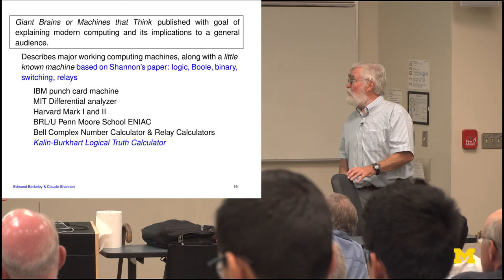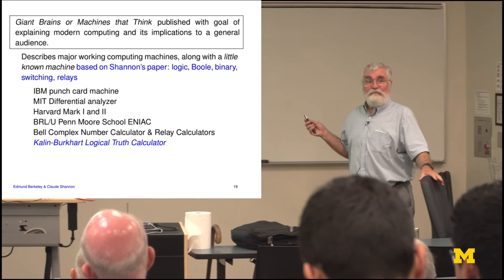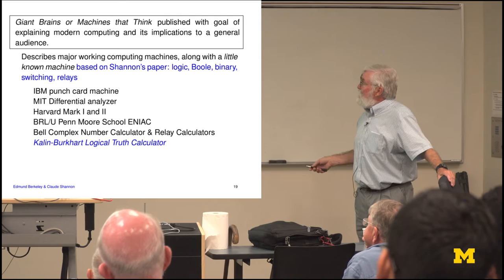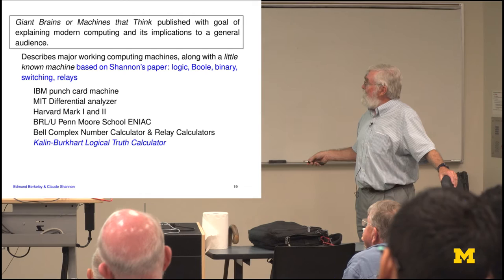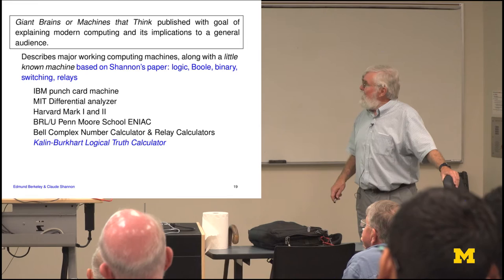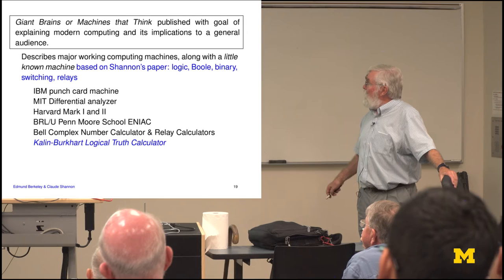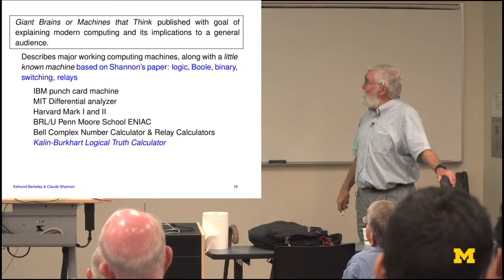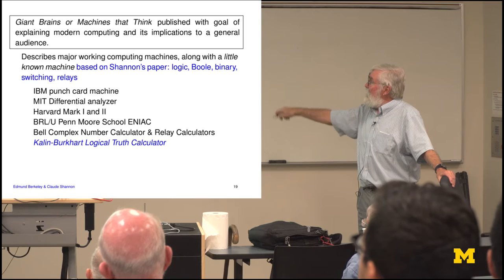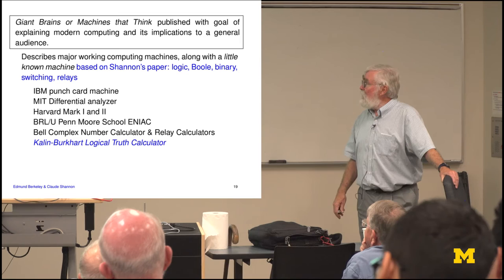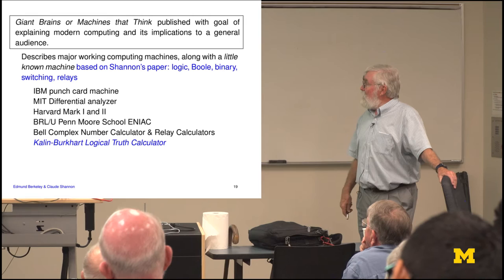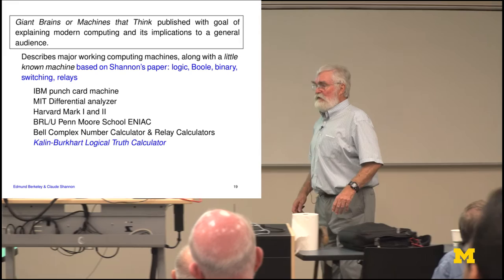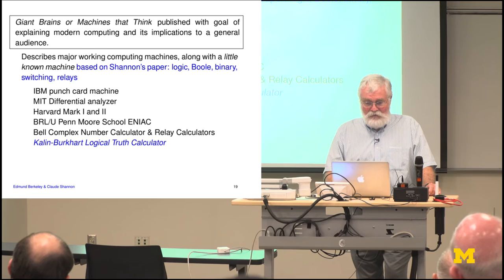In Giant Brains, Berkeley developed the basic ideas in terms of Boolean algebra, symbolic logic, and the underlying math, and spent most of the book talking about the major machines of the time — machines he had personally seen and worked with, including the Harvard Mark computers, Bell computers, the MIT differential analyzer, and IBM punch card machines. In one of the chapters devoted entirely to the Kalin-Burkhart machine and to Shannon, this was the first major publication bringing news about Shannon to almost the general public and definitely to the computing machinery community.